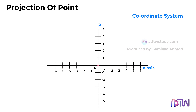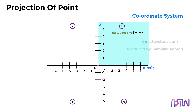This coordinate system gives rise to the quadrant system, dividing the coordinate plane into four areas. The first quadrant encompasses the space between the positive sides of the x and y-axis. For instance, if a point lies 2 cm away from the y-axis and 4 cm away from the x-axis in this quadrant, its location is expressed as positive 2 cm, positive 4 cm.